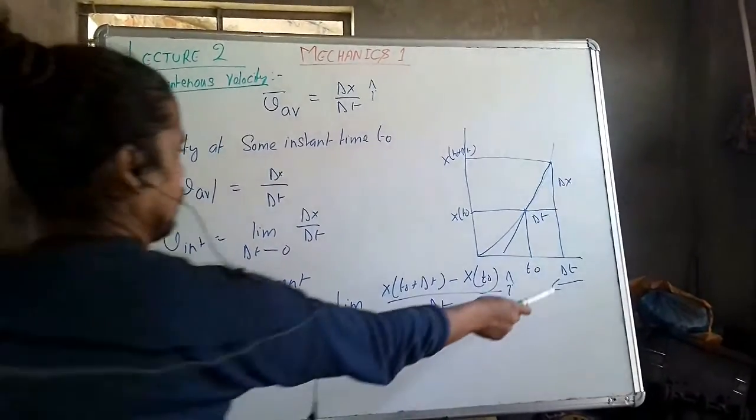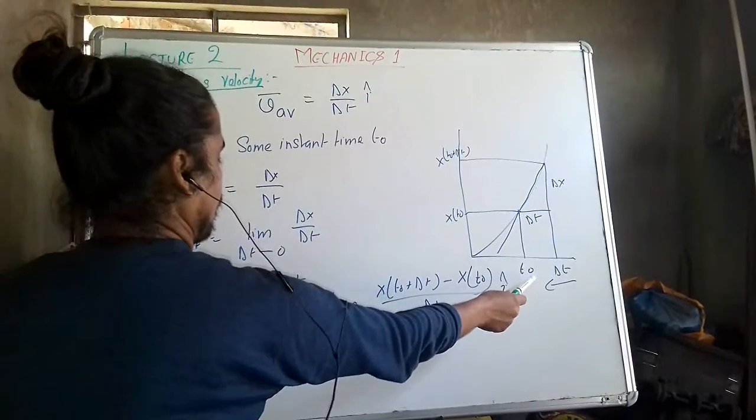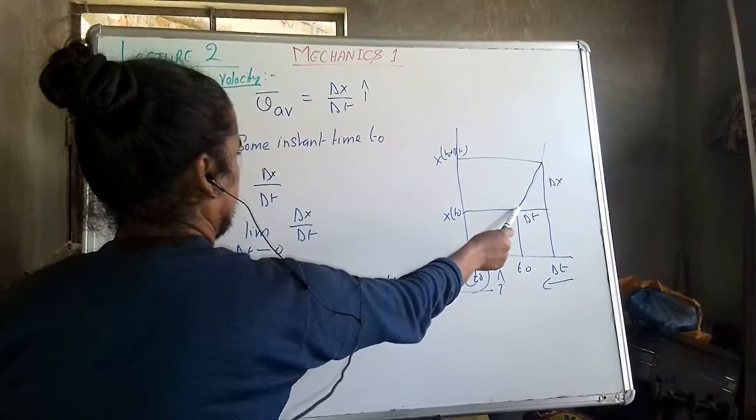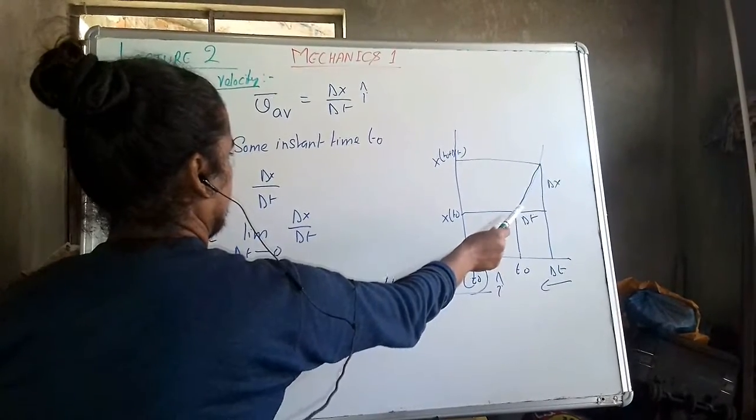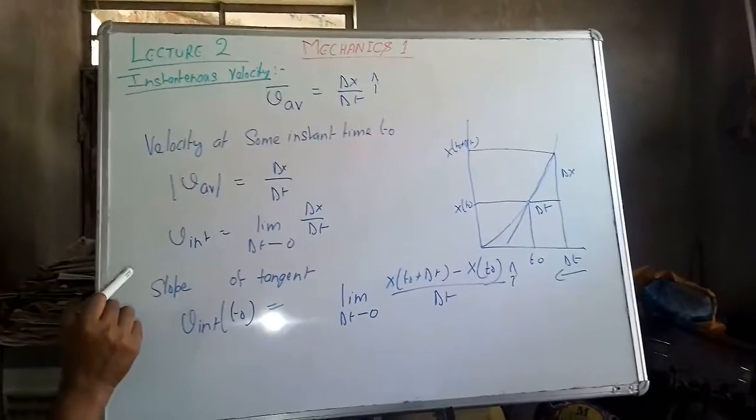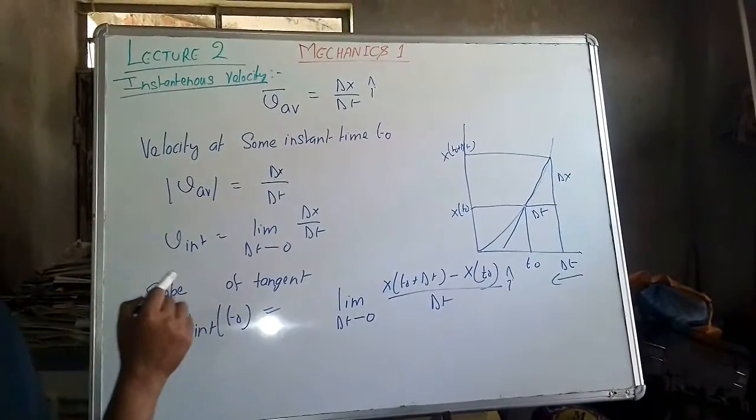And you can see that if delta t will become near to t naught, then at a specific time t naught, we will get at this position the velocity at that time t naught. It means it is simply a slope of tangent.